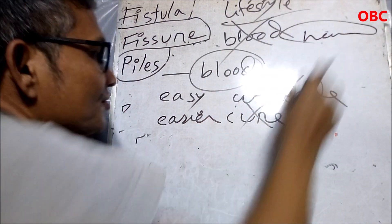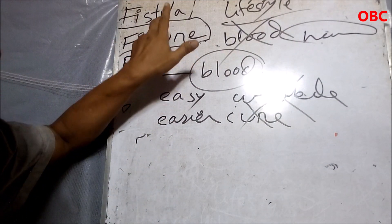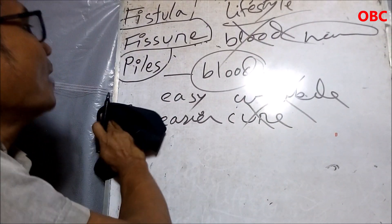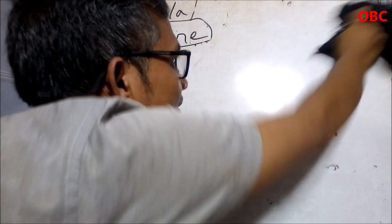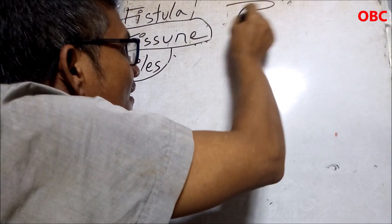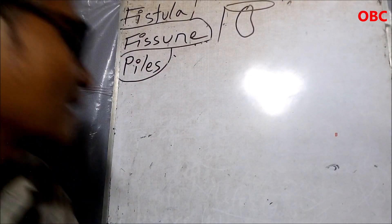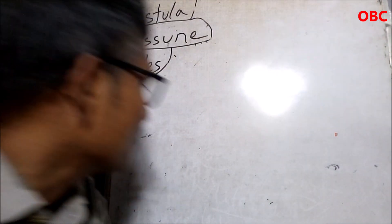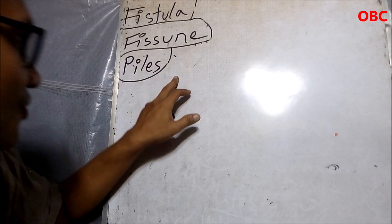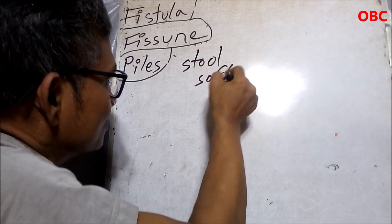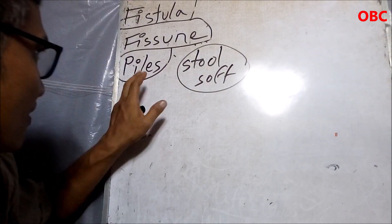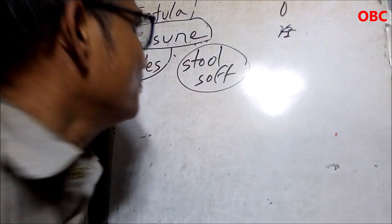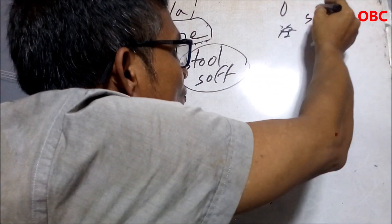Fistula is heavy and dangerous because of the severe pain. But without operation, if you follow a healthy lifestyle, you can solve fistula. In case of piles, you cannot solve it without operation because it is a lump. Most people who don't have operations just try to keep their stool soft. As long as you have soft stool, piles may not disturb you. When passing stool, the lump of flesh can even come outside the anus temporarily.